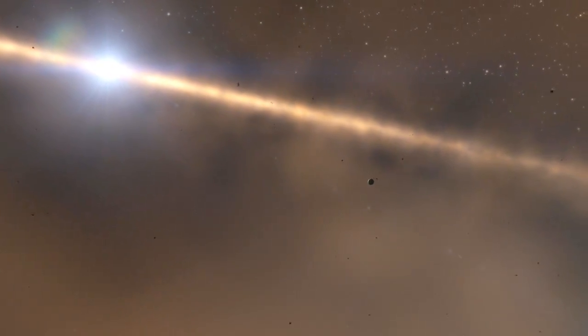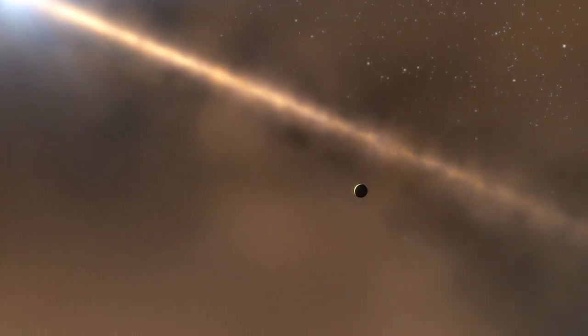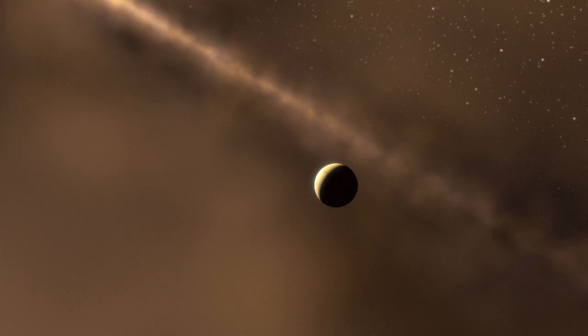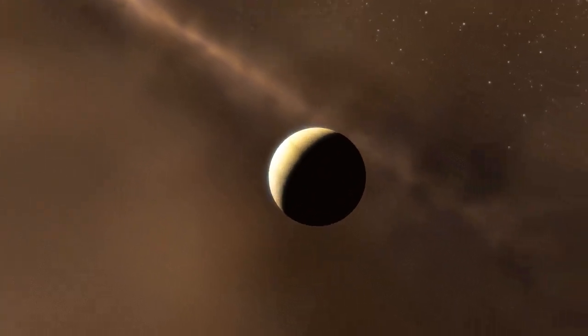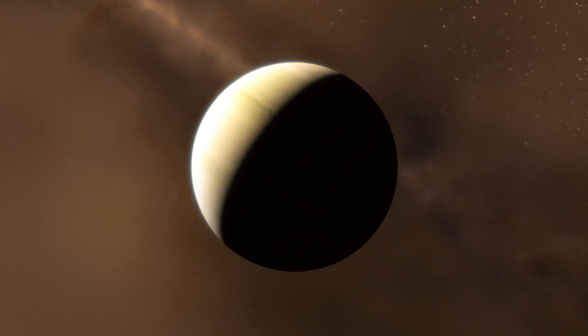The planet has the smallest orbit of all directly imaged exoplanets so far, lying as close to its host star as Saturn is to the Sun. This discovery proves that gas giant planets can form in only a few million years, a short time in cosmic terms.